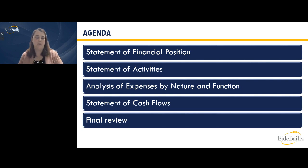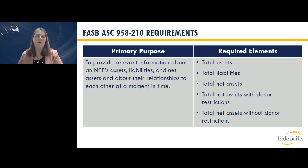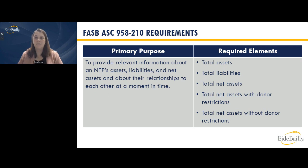We're going to jump into the statement of financial position. Its primary purpose is to show your assets, liabilities, and net assets and their interrelations with each other at a moment in time — at one date, at the end of the fiscal or calendar year. There are five required elements: a total assets line, total liabilities line, total net assets, and the breakout between with and without donor restrictions. Anything else, such as subtotals or additional breakout, is left up to the organization for readability.